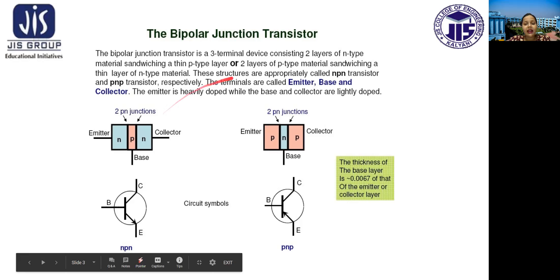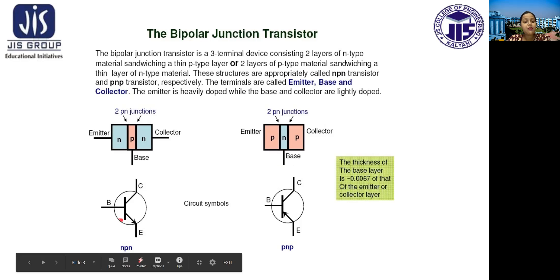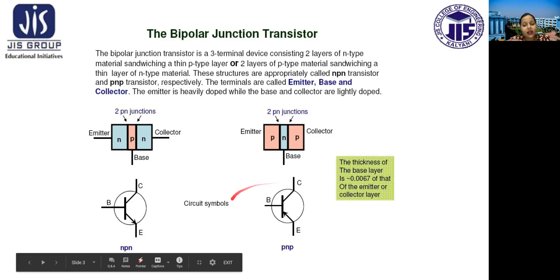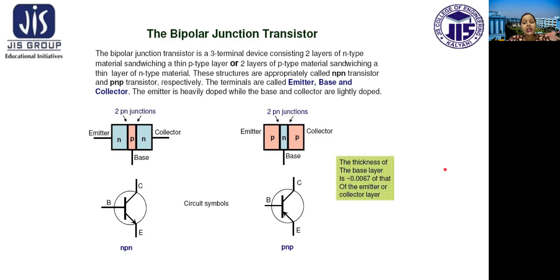This is the diagram of the PNP transistor. This is the symbol of the NPN transistor and this is the symbol of the PNP transistor. How do we remember this? When the arrowhead is outward, it is NPN, and when the arrowhead is inward, it is PNP transistor. One important thing: the thickness of the base layer is almost 0.0067 of that of the emitter or collector layer.